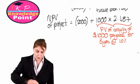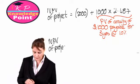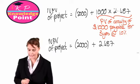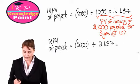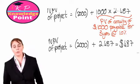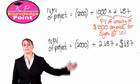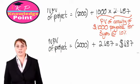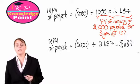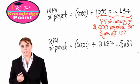Working that through, the net present value is −2,000 plus 2,487, giving us $487 — the same as before, allowing for minor rounding differences. So when you have an annuity, instead of calculating the NPV of each year's cash flow separately, you can simply use your annuity tables and multiply the annual cash inflow by the discount factor from those tables.